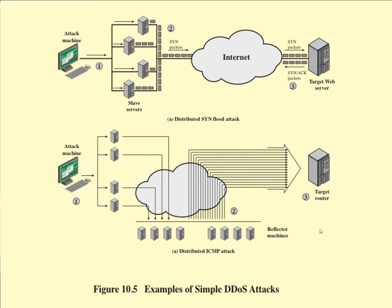They all do it at the same time, which is going to consume a lot of bandwidth. Each time that an echo packet is received, the router is going to have to turn around and respond with the echo. It's going to try to respond to all of these echoes, bogging it down so it's not able to deal with other traffic, leaving no transmission capacity for any legitimate traffic going through that router.